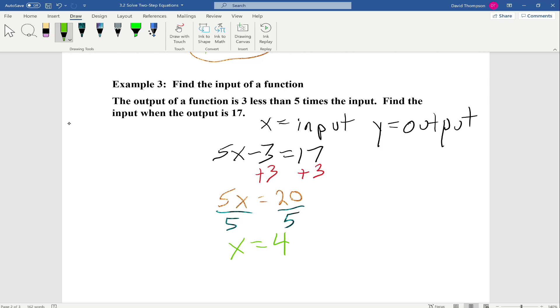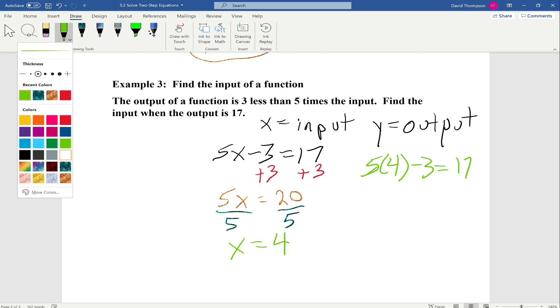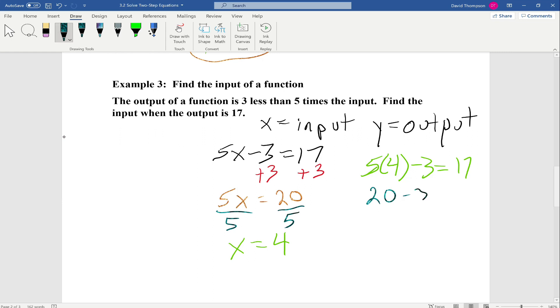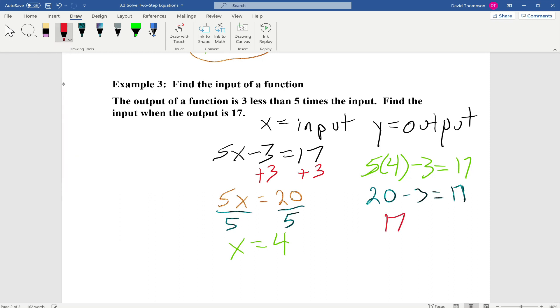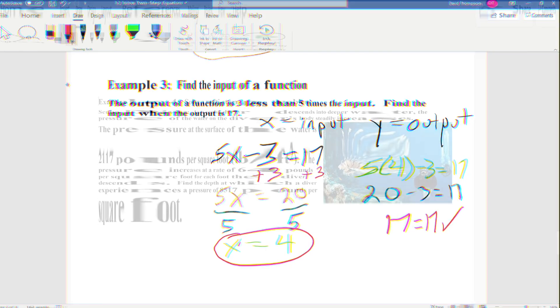If we want to confirm, let me just plug in. So 5 times 4 minus 3 equals 17. Work backwards. 5 times 4 is 20 minus 3, which equals 17. And 20 minus 3 is 17. So we can say 17 equals 17. And it checks out, so our correct answer is x equals 4. And we are done.